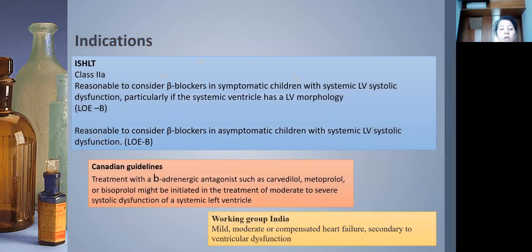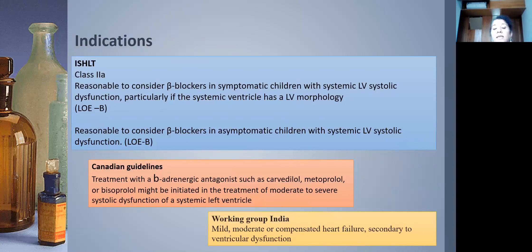According to the International Society of Heart and Transplantation, beta blockers are Class 2A for symptomatic children with systemic LV dysfunction, and reasonable to use in asymptomatic children with systemic LV systolic dysfunction. The Canadian guidelines recommend carvedilol, metoprolol, and bisoprolol only for moderate-to-severe systolic dysfunction of a systemic left ventricle, not for asymptomatic LV dysfunction. The Indian working group led by Dr. Anita recommends use for mild-to-moderate or compensated heart failure secondary to LV dysfunction.